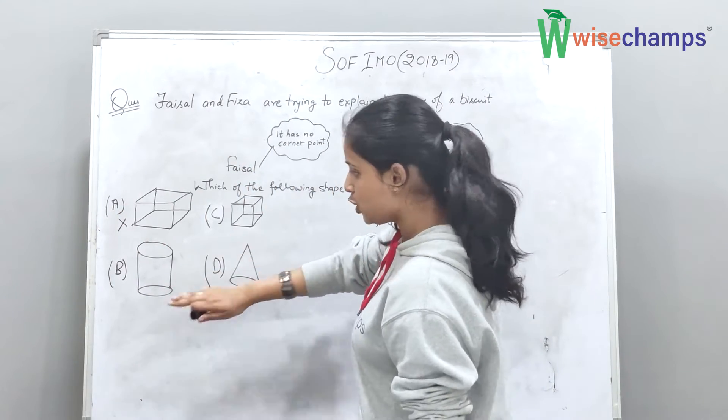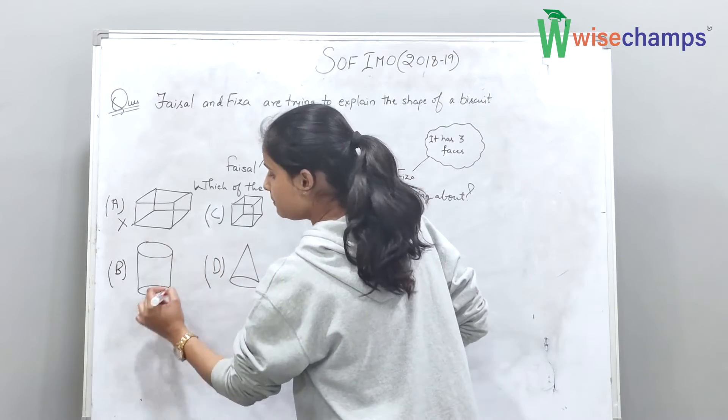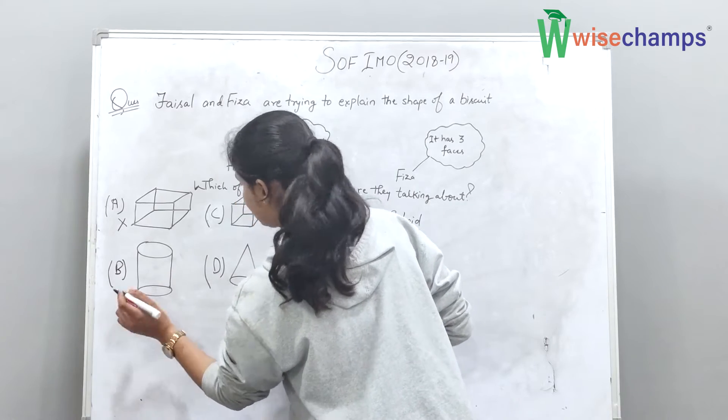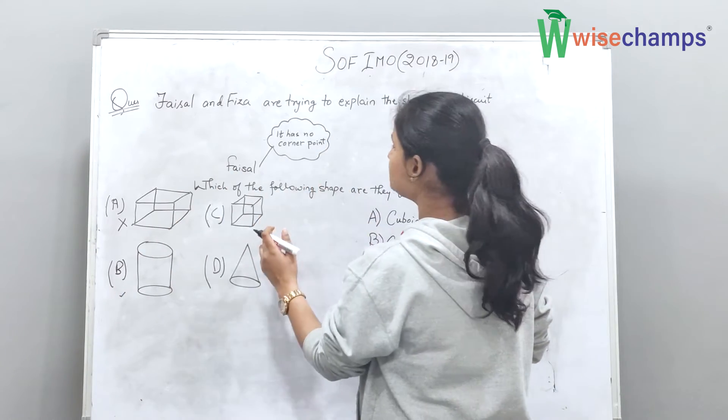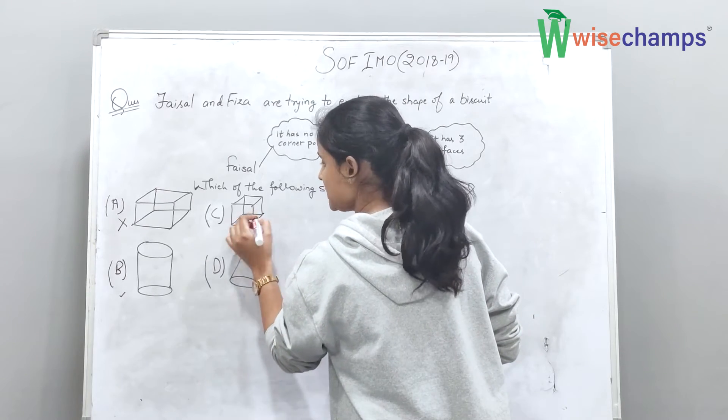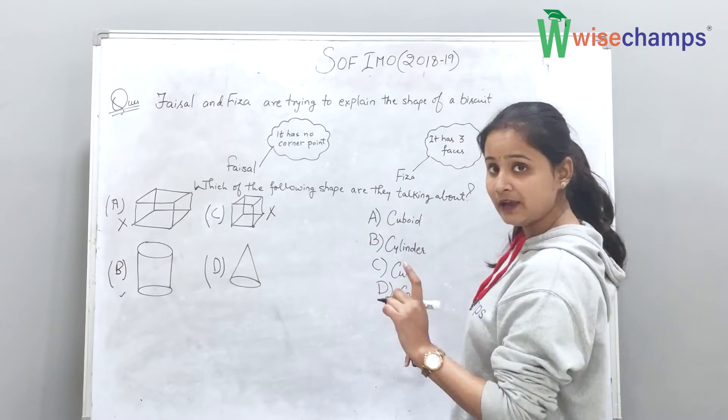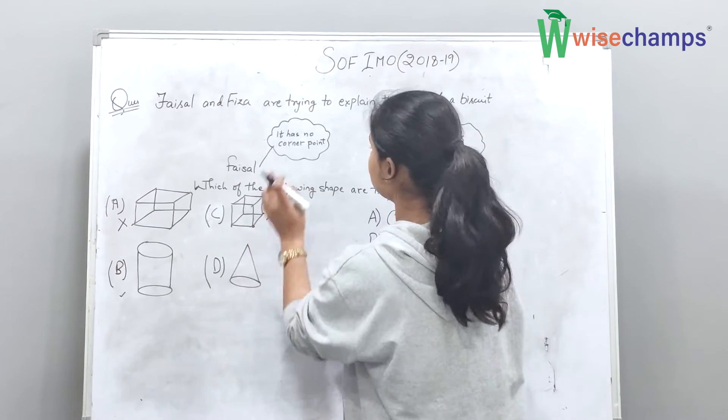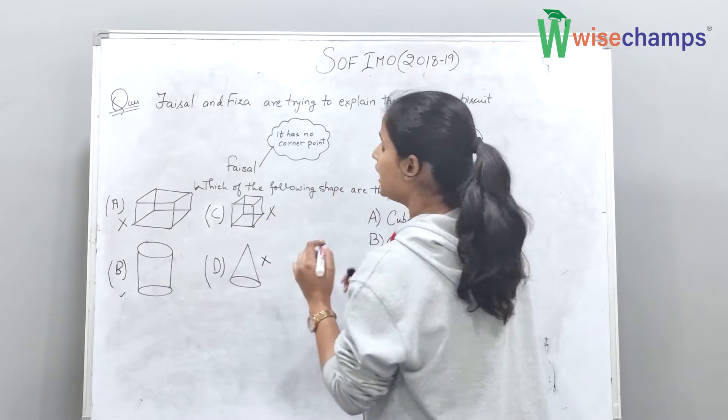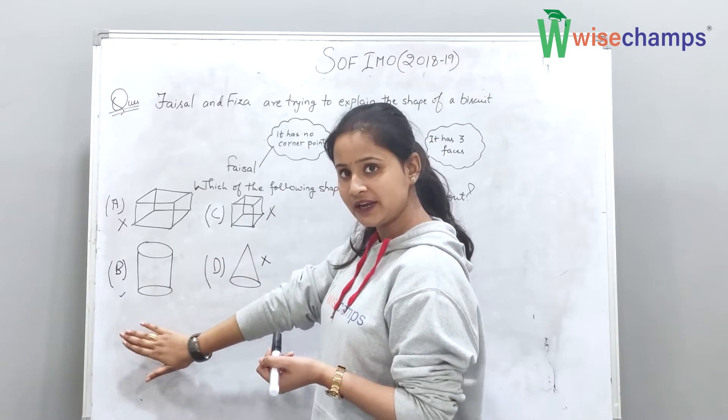Then we go to option B. In option B as we check, there is no corner point. So option B is correct for the first point. Now as we check the first point in C, there are corner points here also. That means C option is also wrong. Now we go to D, corner points are in D also. That means D option is also wrong. So our first statement is only correct in B option.